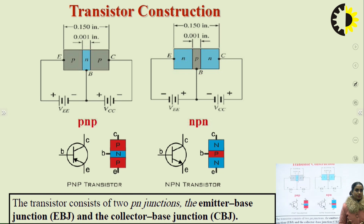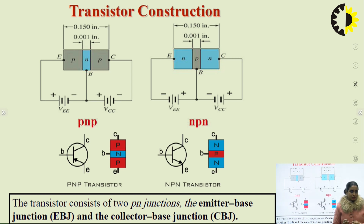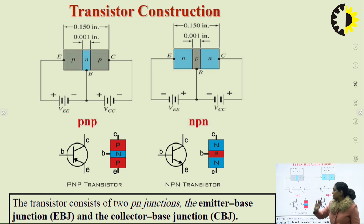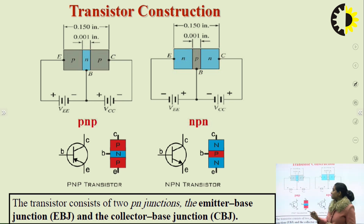In unbiased condition, a transistor acts like an insulator with very small current flow. A transistor can act as an insulator or conductor depending on the biasing — meaning it is provided with some external battery. In a PNP transistor, the emitter-base junction has to be forward biased and the collector-base junction has to be reverse biased in order to operate in the active region.